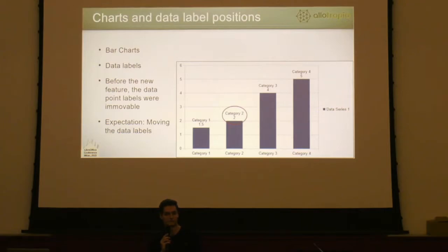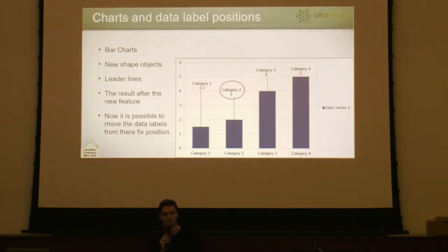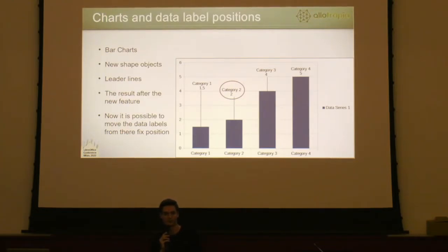Let's see how it looks like. As you can see, these data labels are moved away from their predefined fixed position. It is possible to move them with the mouse or arrow keys as well. To make it work, I had to add some new objects to the data label shapes, and also manage the position and size of the shapes depending on which chart type we have.